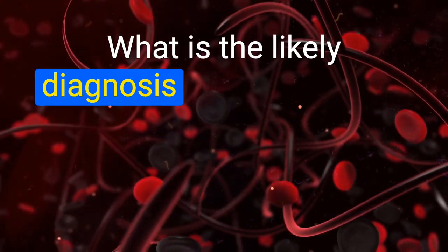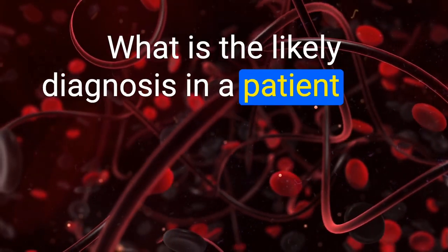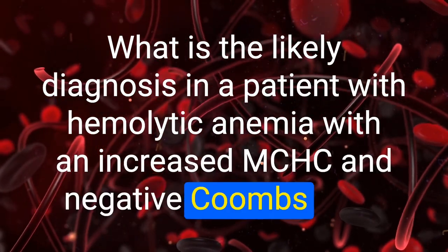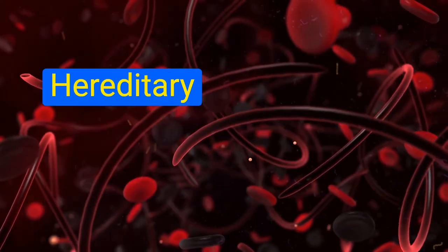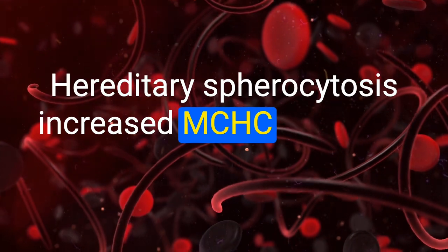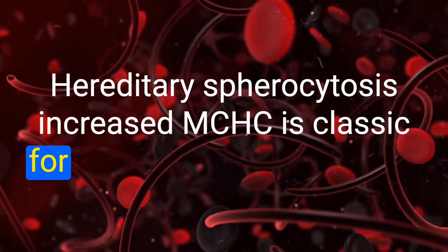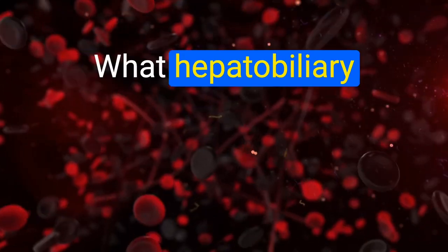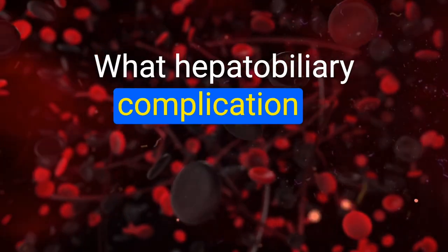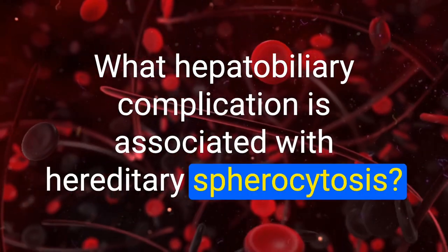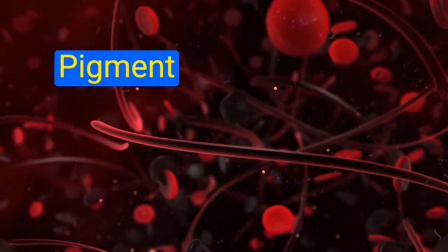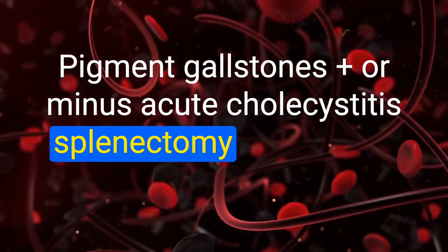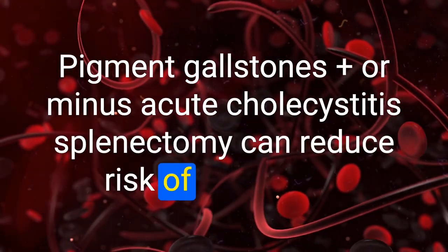What is the likely diagnosis in a patient with hemolytic anemia, increased MCHC, and a negative Coombs test? Hereditary spherocytosis — increased MCHC is classic. What hepatobiliary complication is associated with hereditary spherocytosis? Pigment gallstones plus or minus acute cholecystitis. Splenectomy can reduce the risk of gallstones.